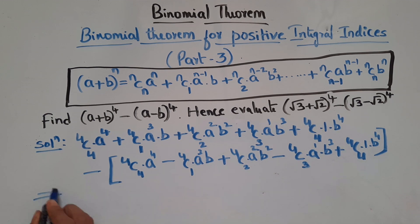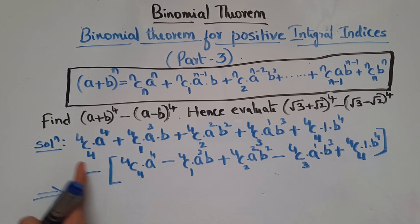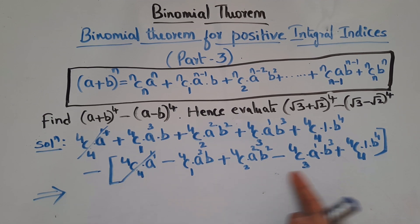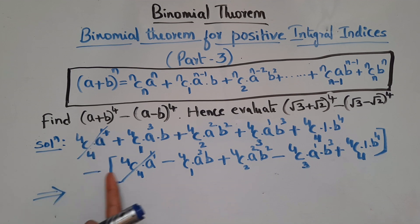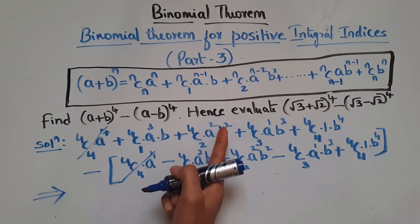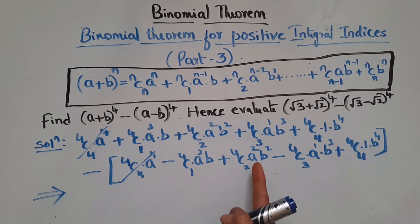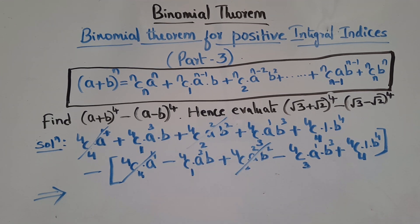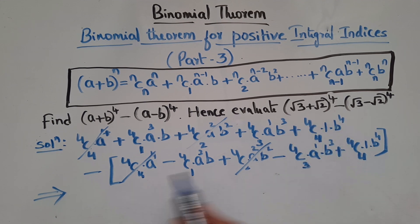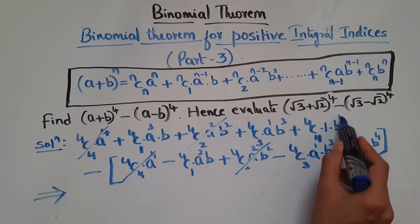Now let's see what terms cancel. When we multiply the minus sign through the second expansion: the 4C0·a⁴ terms are positive and negative, so they cancel. The 4C2·a²·b² terms also cancel — plus and minus. The 4C4·b⁴ terms cancel as well — plus minus gives minus, so they cancel.